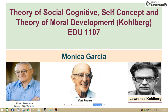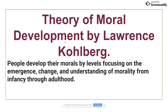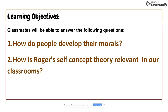Hi, this is Monica Garcia and today I'm going to be talking about the theory of social cognitive self-concept and the theory of moral development by Kohlberg. I apologize for my pronunciation but I hope you will understand me. Let's start with the objectives for this class. After these lessons, you have to be able to answer two questions: how do people develop morals, and how is Rogers' self-concept theory relevant in our class?